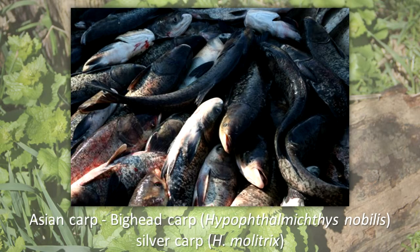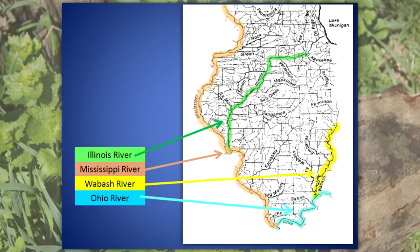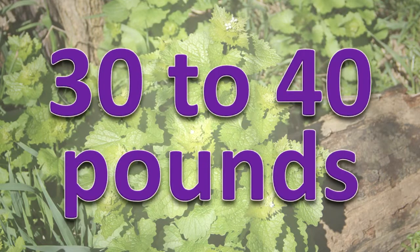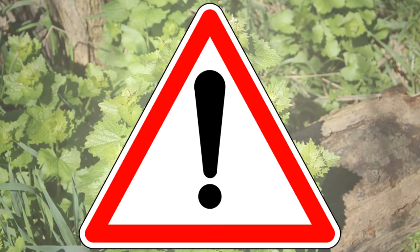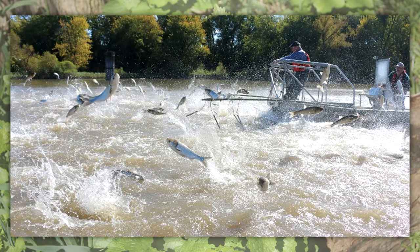Asian Carp. Bighead carp and silver carp are two species of carp from Southeast Asia that are considered invasive. They are present in the Illinois, Mississippi, Ohio, Wabash, and other large rivers and their tributaries in the state, as well as in many lakes. Their diet is the same as that of many native species. They grow very quickly and average about 30 to 40 pounds in weight, although they can weigh much more. They take food away from native species and can be a danger to human health. The silver carp has the habit of jumping out of the water when boat motors are near, and people in the boat can be injured.